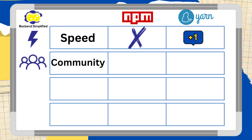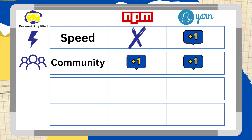The second category is community. We began this video by mentioning that Facebook initially developed Yarn, but in 2016 it was released as open source software. Both NPM and Yarn now have big and active communities. So let's give a point to both of them in this category.